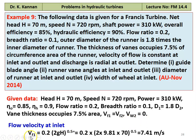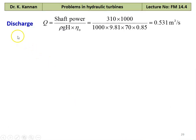We calculate the flow velocity at the inlet. Vf1 equal to flow ratio into square root of 2gH, which is 0.2 into 2 into 9.81 into 70 to the power 0.5 equal to 7.41 meters per second. The discharge from the definition of overall efficiency: Q equal to shaft power divided by rho g H into overall efficiency, which is 310 into 1000 divided by 1000 into 9.81 into 70 into 0.85 equal to 0.531 meter cube per second.